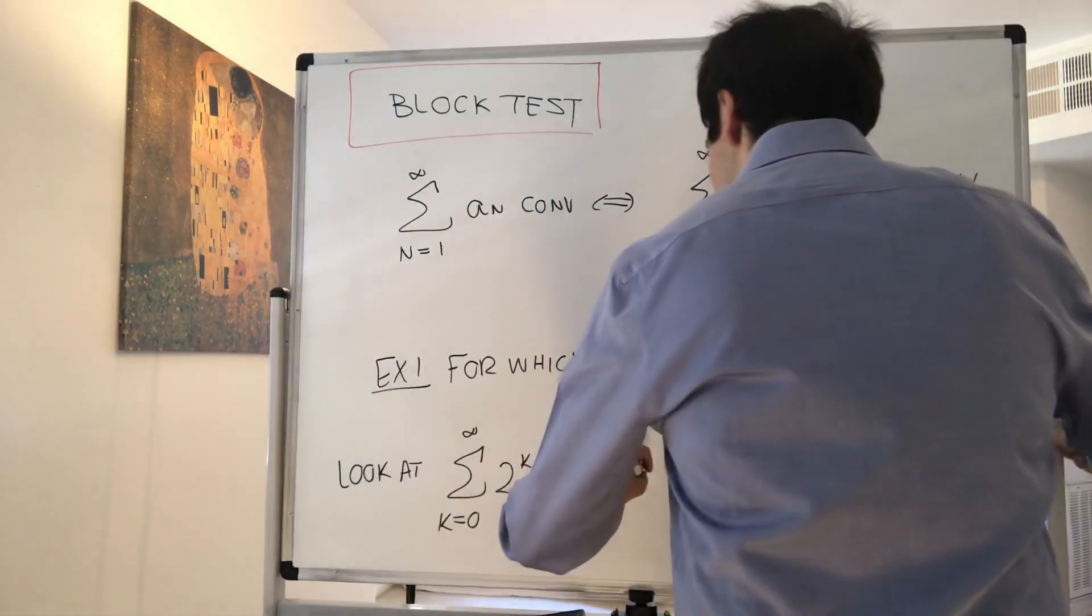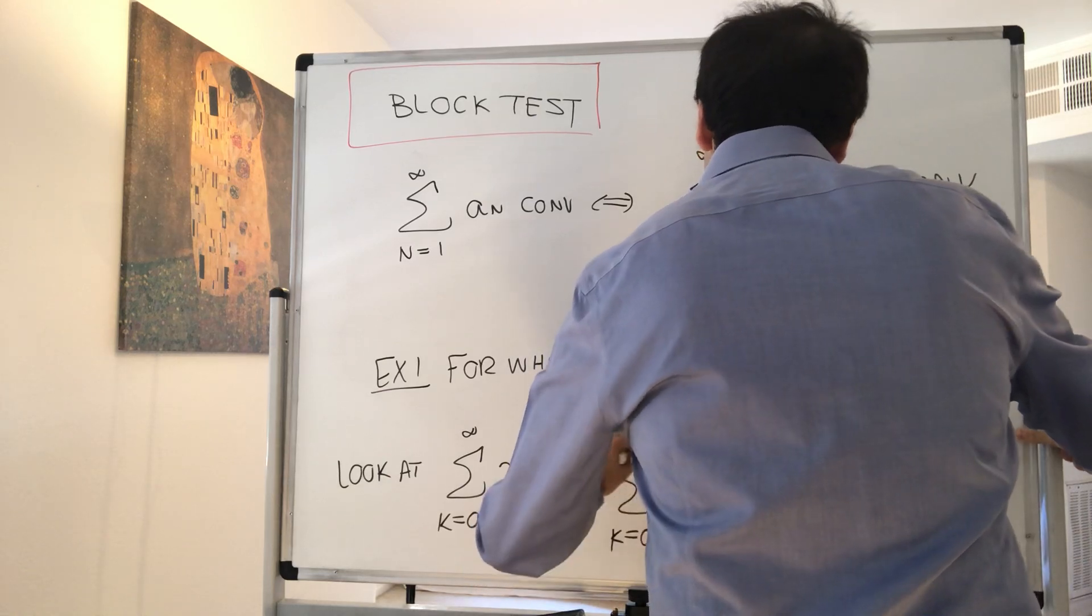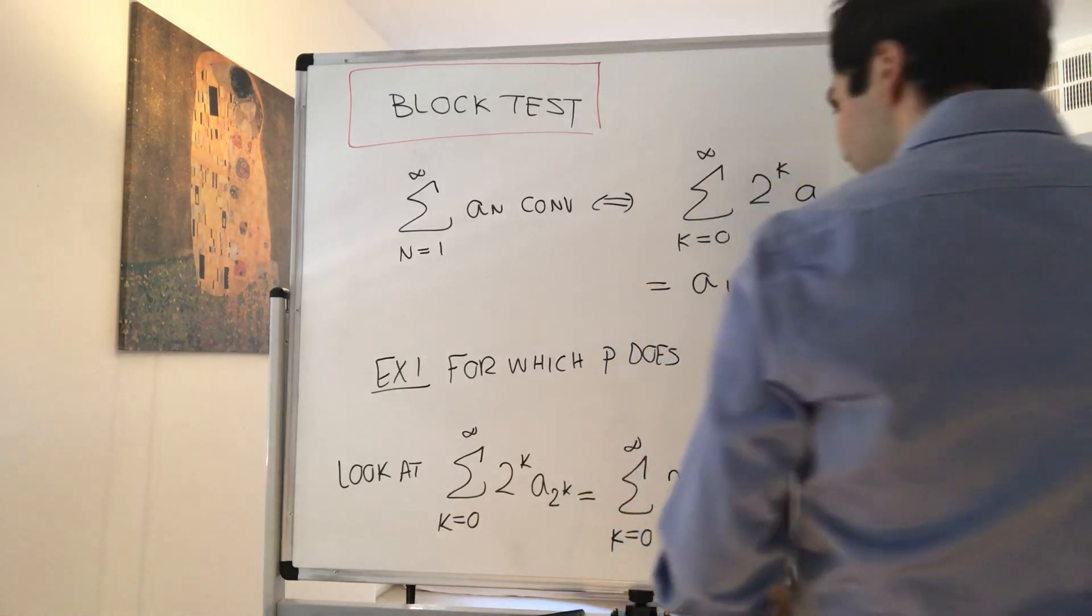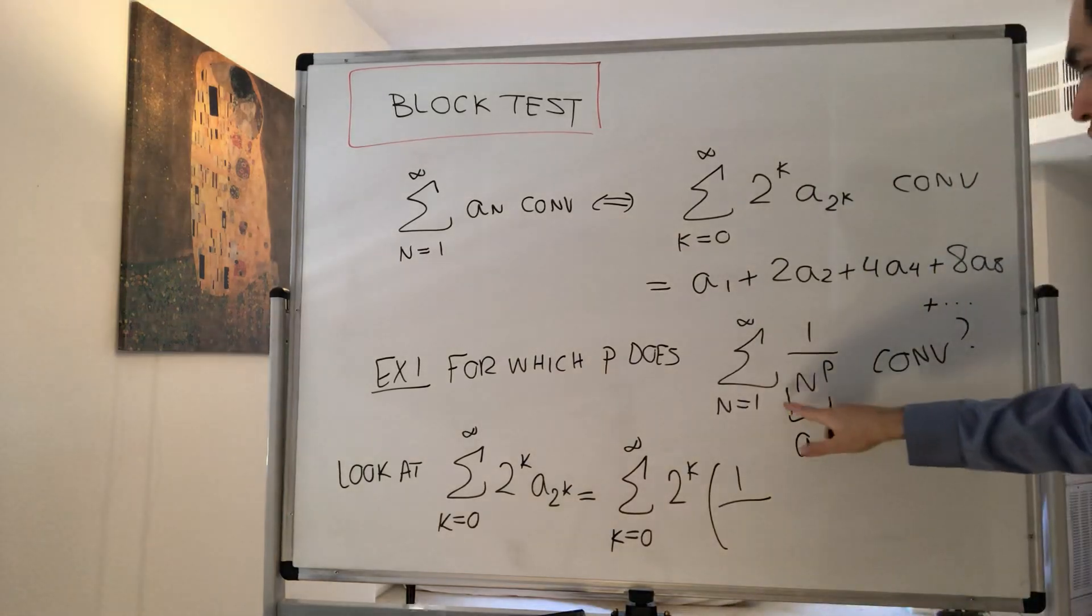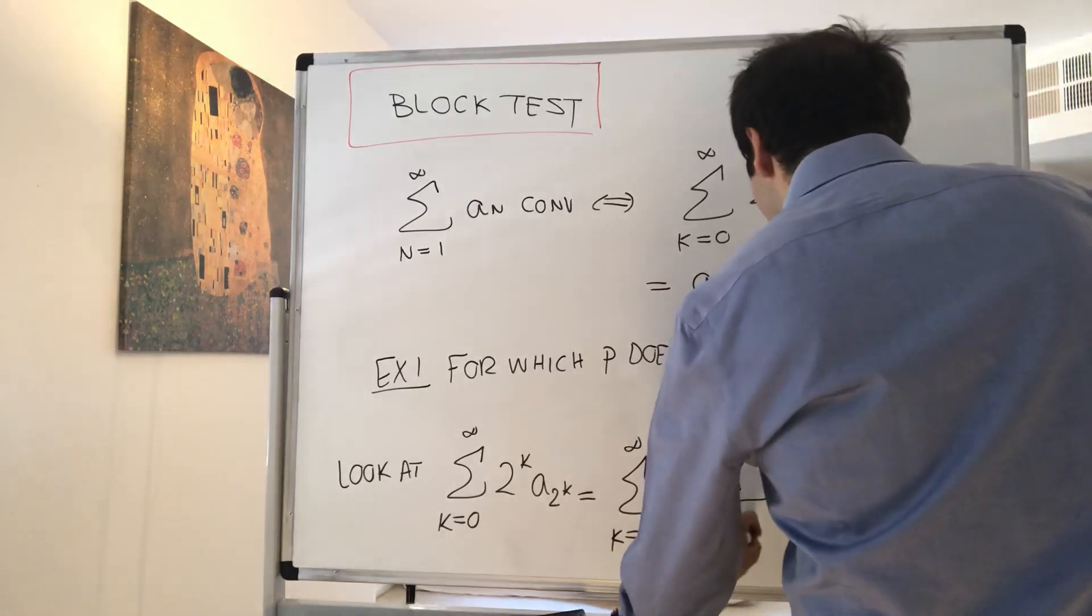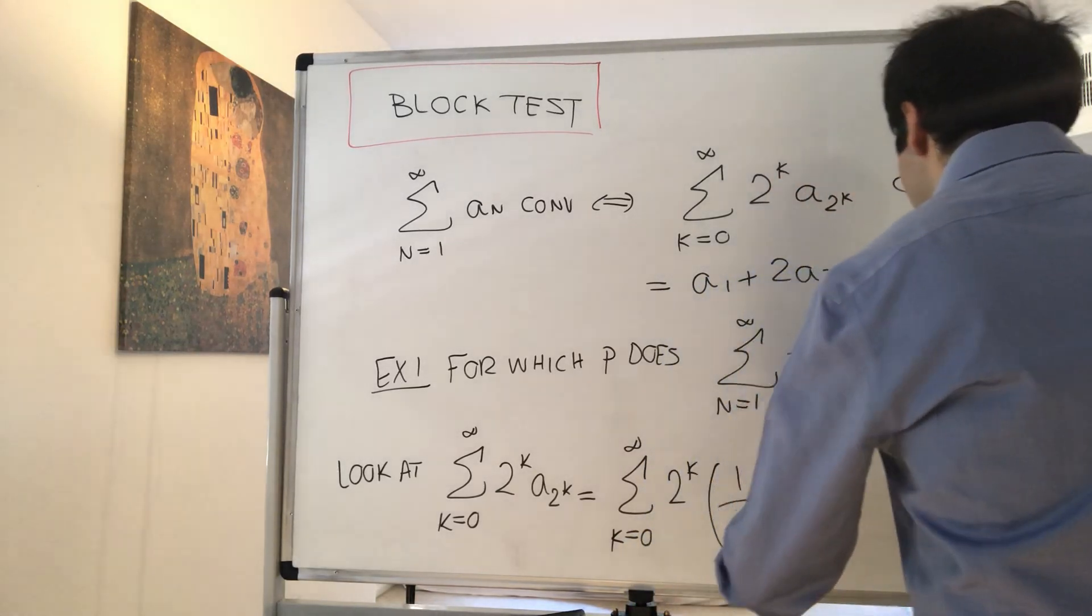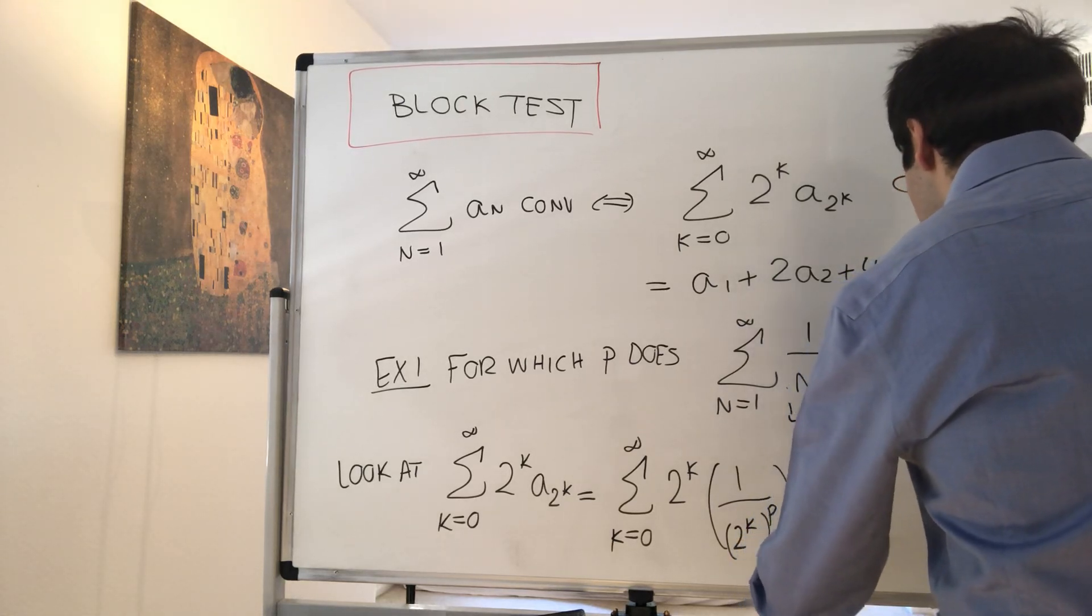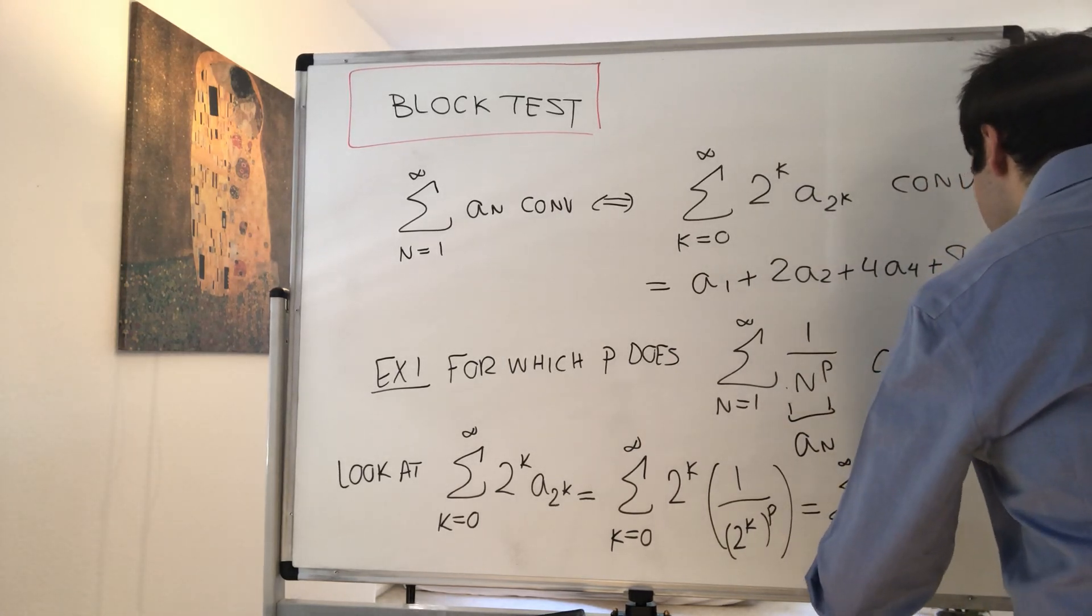Which becomes the sum from k equals 0 to infinity of, let's see, 2^k, and then a_(2^k) is 1 over, so now you replace n by 2^k, so 1 over (2^k)^p, which just becomes the sum from k equals 0 to infinity of 2^k over (2^k)^p.